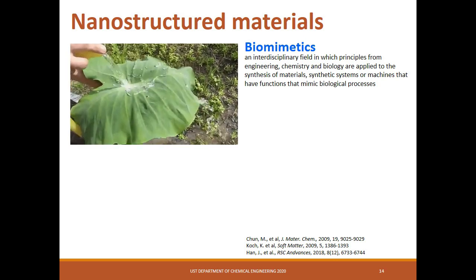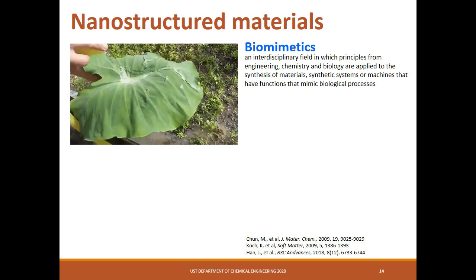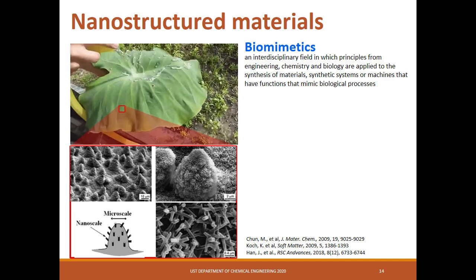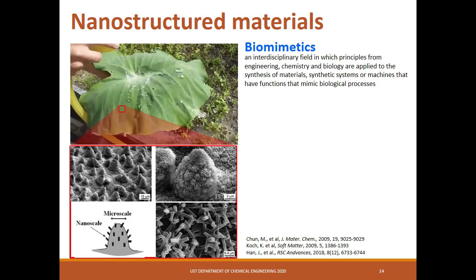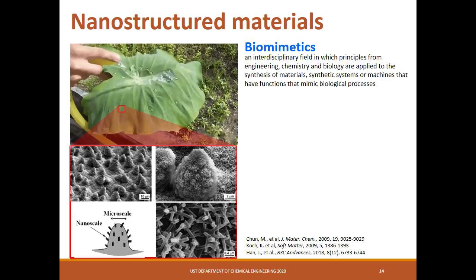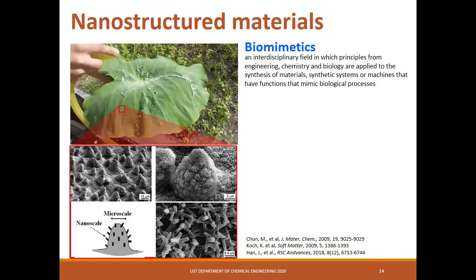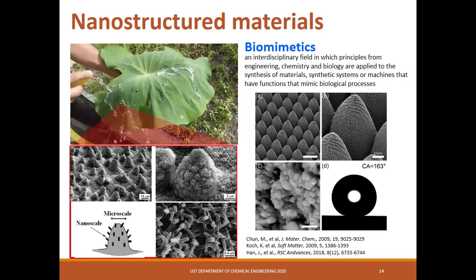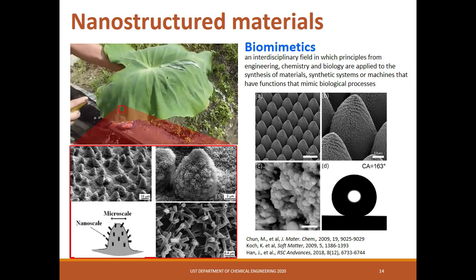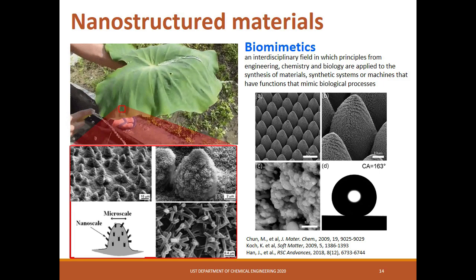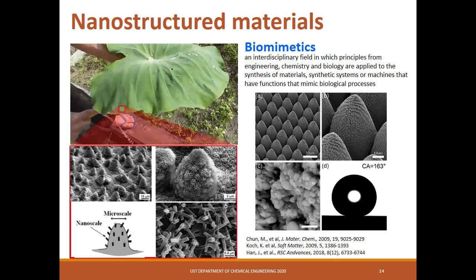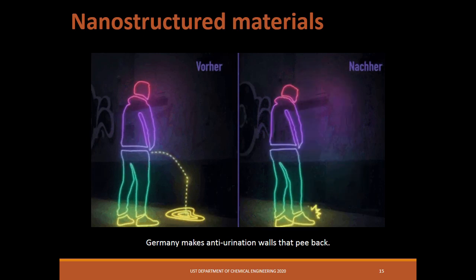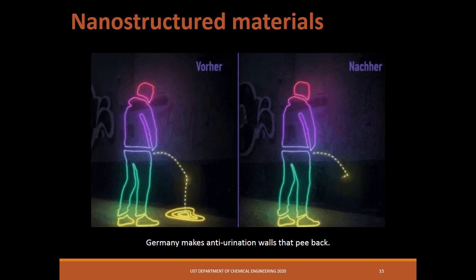Superhydrophobic surfaces are common in nature, such as the wings of the butterfly, the back of the duck, and the lotus leaf. The surface of the lotus leaf has microscale protruding knobs covered with nanomaterial with low surface energy. This concept was adopted to produce artificial superhydrophobic surfaces, one of which is a study by Han et al., where they used an ultrafast laser to fabricate micro and nano-hierarchical structures on metal surfaces with tunable microcones, producing abundant nanostructures with high durability. In Germany, they have a unique application: superhydrophobic coatings on walls to make anti-urination walls.